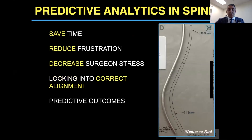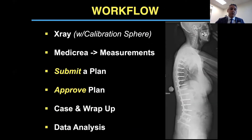This is the unit rod for one of my cases. I've noticed it saves time and reduces frustration and surgeon stress. But also, I'm locking the patient into a predicted outcome that is hopefully improving their alignment — and it's the correct alignment. The steps highlighted in yellow are really the only time I have to interact with the algorithm as a preparatory step toward the case.